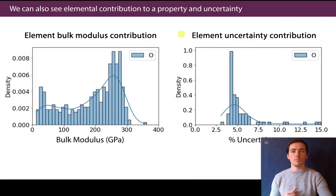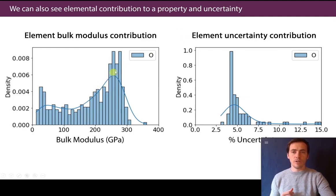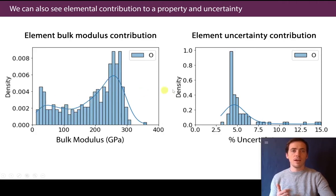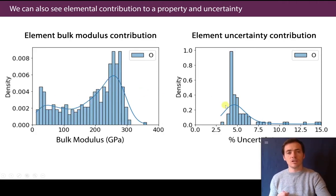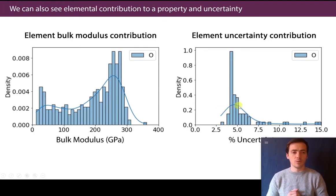Looking at per-element contribution to the prediction of bulk modulus: stiff, incompressible materials are things like transition metal borocarbides and nitrides, which is exactly what the algorithm is paying attention to when predicting high bulk modulus. These are the regions causing those high predictions — something we could not visualize before with other approaches. On a per-element basis, you can look at oxygen's contribution, and you can also get per-element uncertainty contributions, which is another really interesting tool we didn't have before.